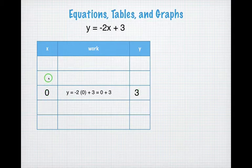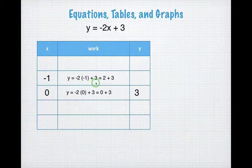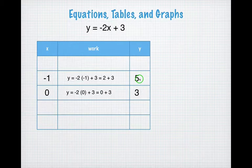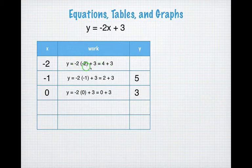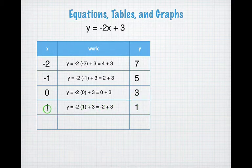Now I'll go to a negative number and then a positive number. I'm going to start with negative 1 and plug it into my equation: y equals negative 2 times negative 1 plus 3. Negative times a negative is positive 2, and 2 plus 3 is 5 — there's my second point. I keep going negative: negative 2. Negative 2 times negative 2 plus 3 — that's positive 4, and 4 plus 3 is 7. Now on the other side of zero, I'll plug in positive 1: y equals negative 2 times 1 plus 3, which is negative 2 plus 3, which is 1. So I've got the point (1, 1).